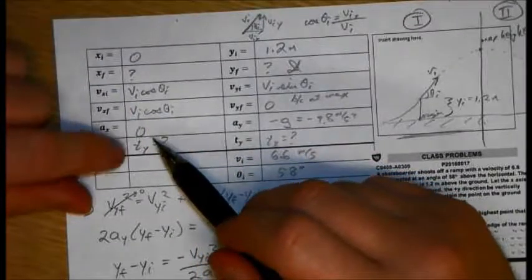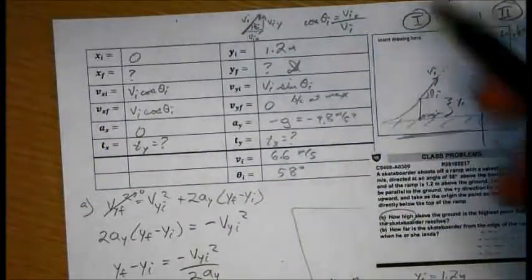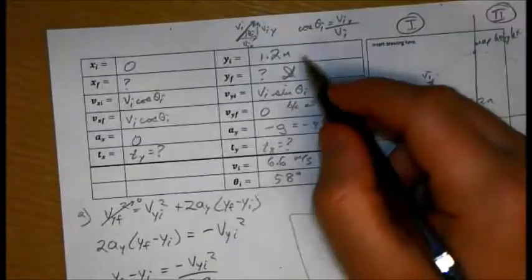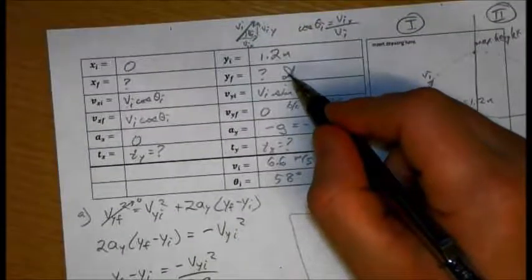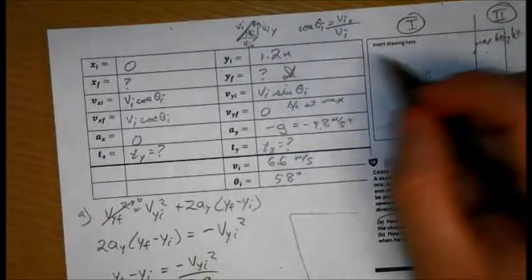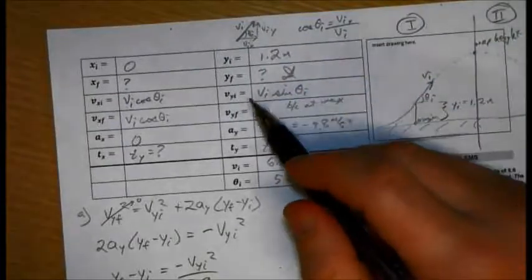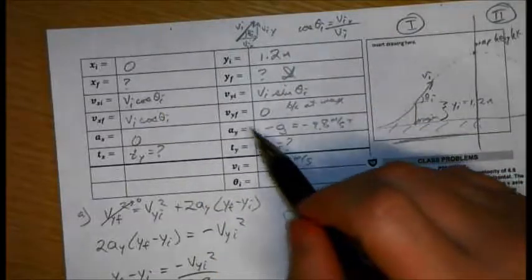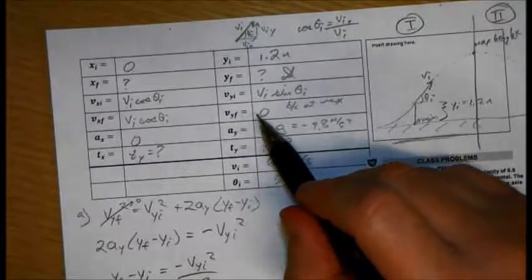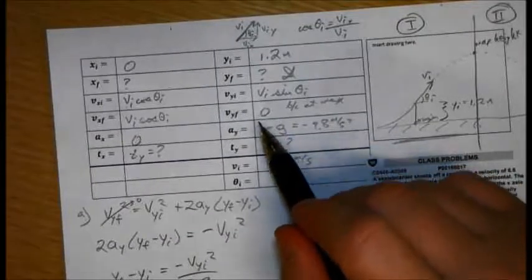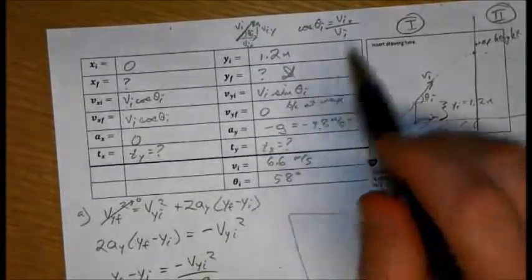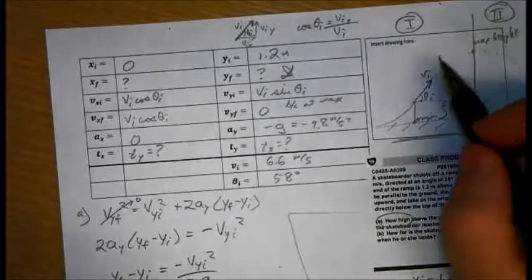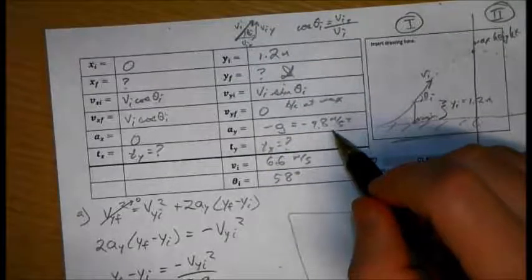Time, we don't know what time is but we know it's equal in each dimension. y initial, we start out at 1.2. We end up, well we don't know where we end up but we know that's what we're trying to find. How far above the ground did we end up? And the initial velocity in the y direction is just similar to this but it's using sine instead. The final velocity in the y direction is zero because that's where the object stops. That's where the skateboard stops, it ceases to gain altitude.